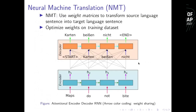Let's talk about what NMT really is. We have a bunch of weight matrices and we transform the source language sentence into the target language sentence. For example, to translate the English sentence 'maps do not byte' into German, we first encode the source sentence into hidden representations — each is a vector. Then the decoder receives a start token and predicts the first token, which is then fed to the next step, and it predicts the next token and so on, until an end token is produced and the decoding ends.